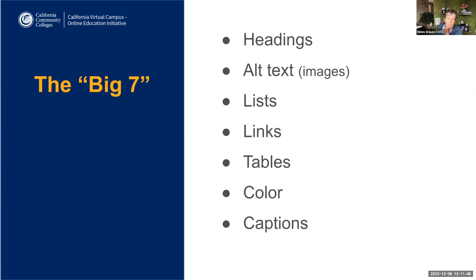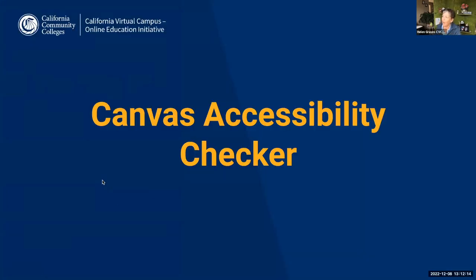We're going to dive right in and talk about tools. If you have a question, please put it in chat — and put a question mark in front of your question so it's easier for us to spot it as we scroll through. It's easy for questions to slip through the cracks. So I want to talk about the Canvas Accessibility Checker, alias the little man in Canvas.